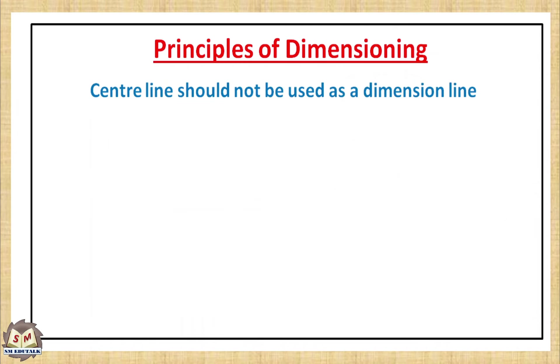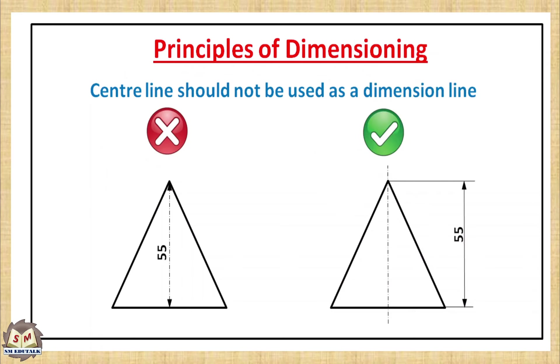Center line should not be used as a dimension line. In this object it represents a triangle, maybe it is a cone. So there is an axis passed through its center. The height of the triangle is dimensioned as 55mm, and the dimension line is kept over the axis line. So this is wrong because we are not allowed to use a center line as a dimension line. So separate the dimension line using the extension lines and place it outside the object. Use the axis line separately. Now this one is correct.